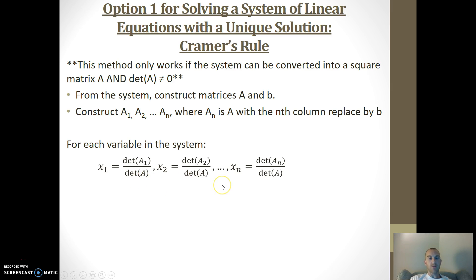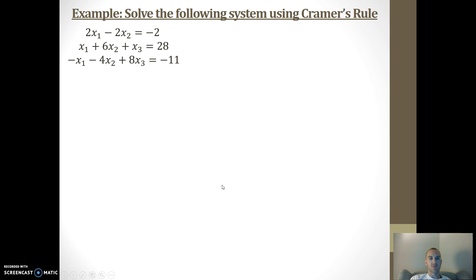Say I have this system. First thing I'd want to do is create the A and the B matrices. My A matrix, if I look, I've got 2, negative 2, and I don't have an X3, so I'll put in 0. And then 1, 6, 1, and then negative 1, negative 4, 8. There is my A matrix. And then my constants are on the right-hand side: negative 2, 28, and negative 11.